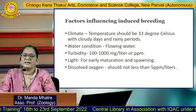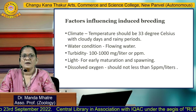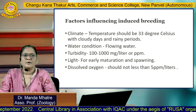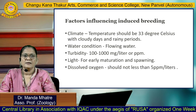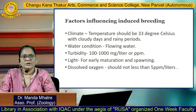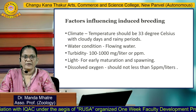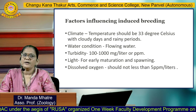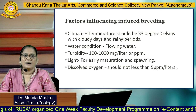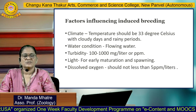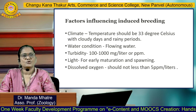Factors influencing induced breeding include climate, water condition, turbidity, light, and dissolved oxygen. Climate should be around 33 degrees Celsius with cloudy days and rainy periods. Water condition should be flowing water, because most Indian major carps breed in flooding rivers. Turbidity should be around 100 to 1000 mg per liter (ppm). Light promotes early maturation and spawning. Dissolved oxygen should not be less than 5 ppm per liter.